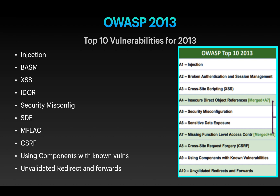The OWASP 2013 top 10 vulnerabilities are: first, Injection; second, Broken Authentication and Session Management; third, Cross-Site Scripting (XSS); fourth, Insecure Direct Object Reference (IDOR); fifth, Security Misconfiguration; sixth, Sensitive Data Exposure (SDE); seventh, Missing Functional Level Access Control (MFLAC); eighth, CSRF (Cross-Site Request Forgery); ninth, Using Components with Known Vulnerabilities; and tenth, Unvalidated Redirects and Forwards.